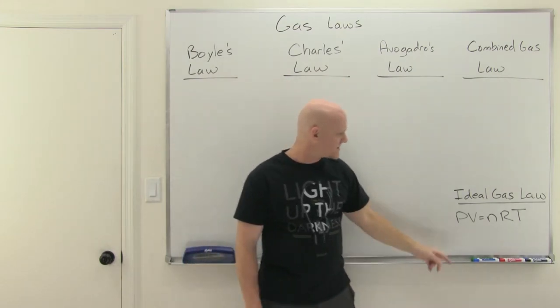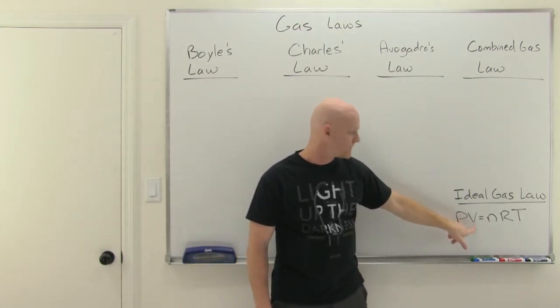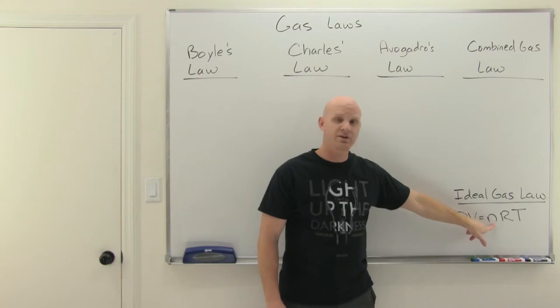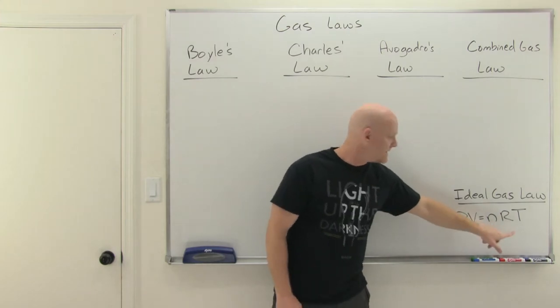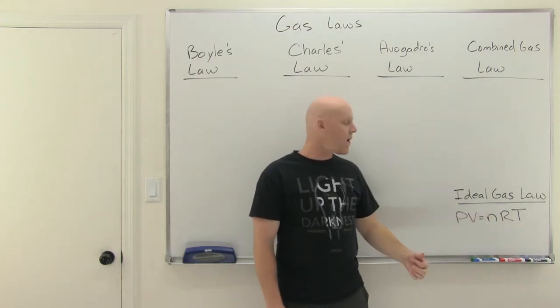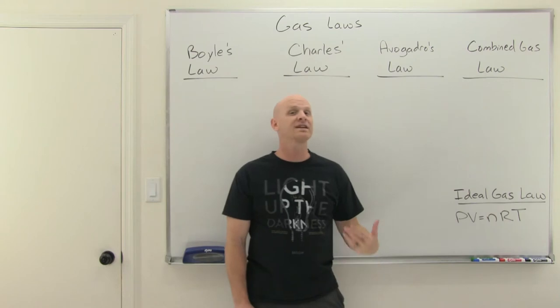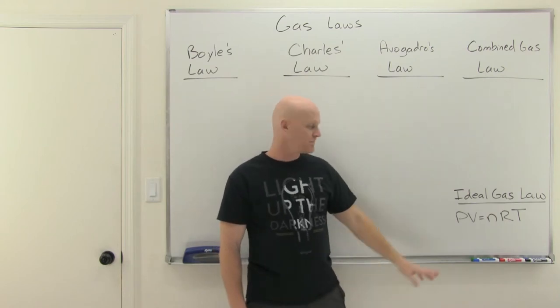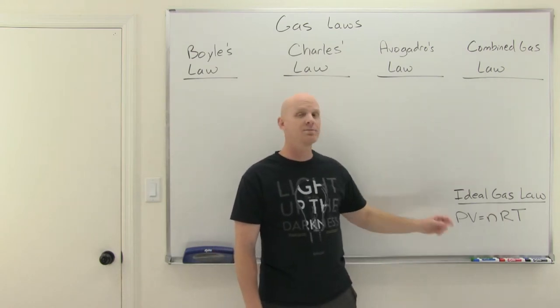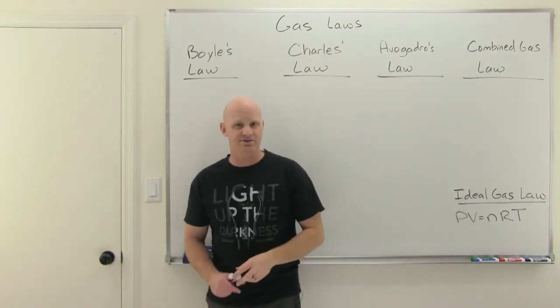The ideal gas law relates pressure, volume, N (the number of moles of gas), and temperature T. R is what we call the universal gas constant — it's a constant. So there are four variables and one constant in the ideal gas law.